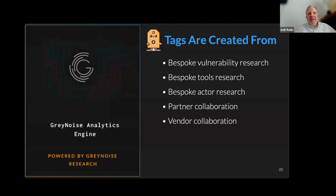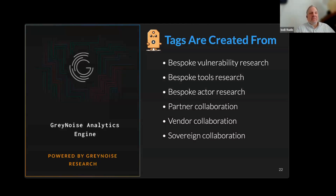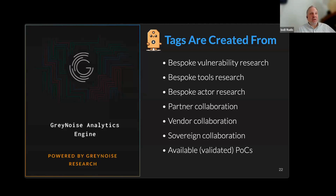We also try to work with hardware and software vendors like firewall vendors, though they're not always the most forthcoming — some think obscurity is the way to security. We do sovereign collaboration, meaning any given .gov across the globe might give us information that we use for making tags. We look at proof-of-concept code on the internet — and just so everyone knows, don't trust POC code; don't run it in a non-safe environment. We validate everything and won't trust that a POC works until we've vetted it. And we have some new cool AI-assisted traffic analysis that you're going to see in a moment.